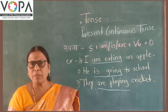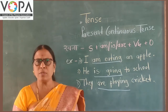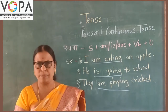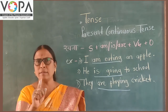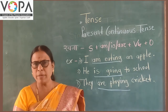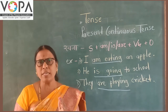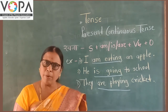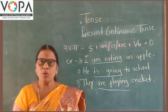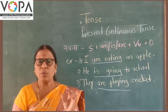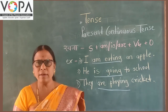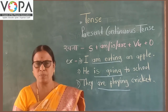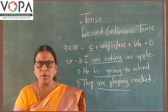When we use am, is, and are: with 'I' we use 'am'; with 'he', 'she', 'it' we use 'is'; with 'we', 'you', 'they' we use 'are'. To understand more, look at the given chart carefully.